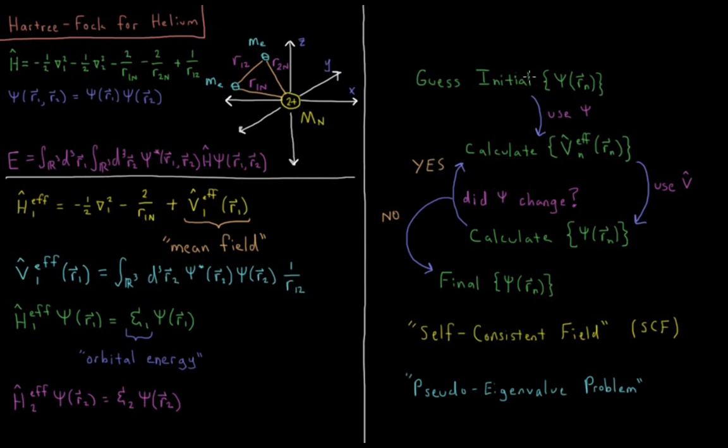The speed at which we converge depends on how good our initial guess orbitals are. There are different methods for choosing guess orbitals, but essentially we guess, calculate a Hamiltonian, get a new wave function, get a new Hamiltonian, and keep going until our orbitals and energies are no longer changing — giving us our final wave functions and final energies. This whole procedure is a pseudo-eigenvalue problem because our wave function and operators are not independent, and the procedure used to resolve this is called the self-consistent field method used in Hartree-Fock.